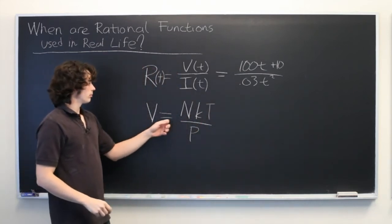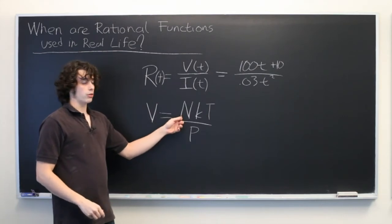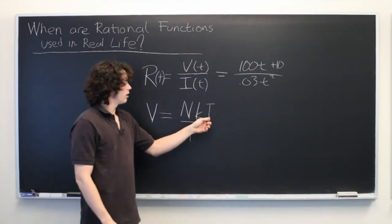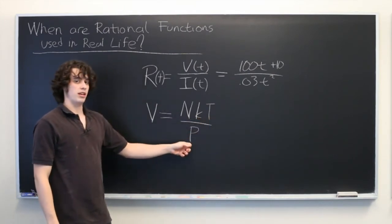Where V is volume, n is the number of molecules in the system, k is Boltzmann's constant, t is temperature, and p is pressure.